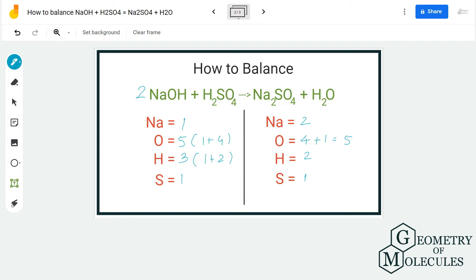So now we have to update our reactant side first and check if it matches with product side. After adding 2 over here, I have 2 atoms of sodium. The oxygen atoms will be 2 plus 4, which makes it 6. The hydrogen atom will be 2 plus 2, which makes it 4. There will be no change in sulfur atom because we have not added any number for that.